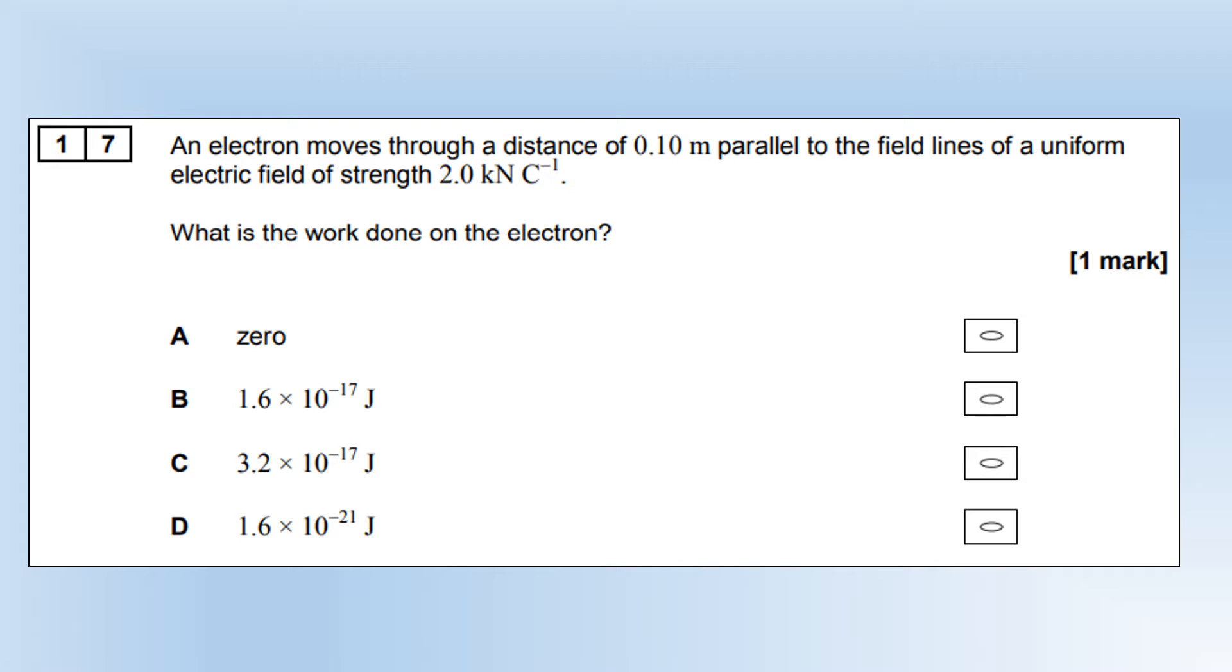An electron moves through a distance of 0.1 meters parallel to the field lines of a uniform electric field of strength 2 kilonewtons per coulomb. What is the work done? Work done is force times distance. Force is field strength times charge, so the work done is charge times field strength times distance. Plug the numbers in, and we end up with option C.